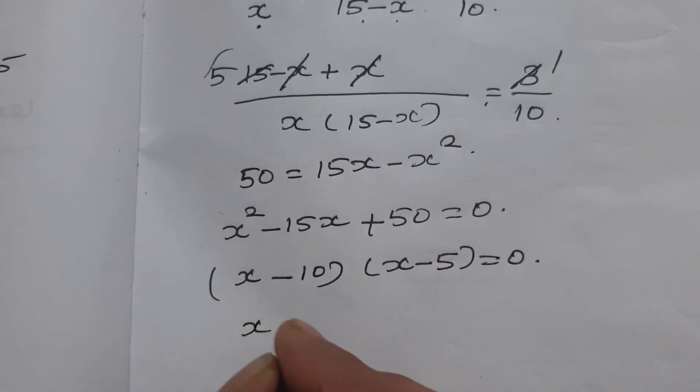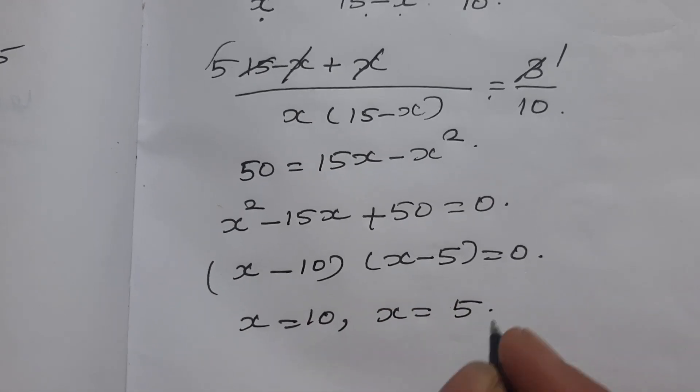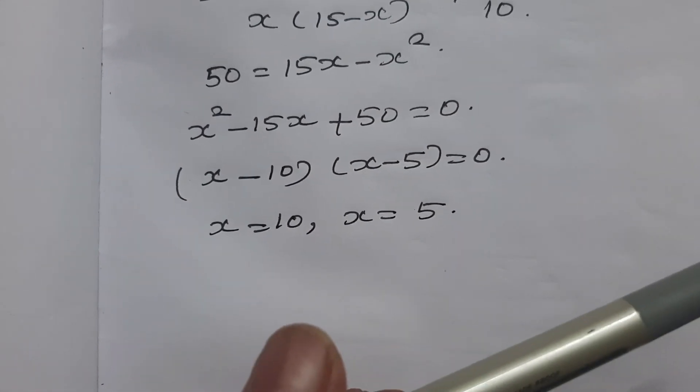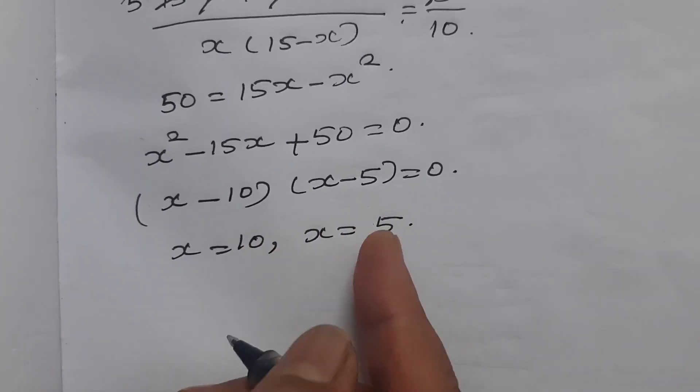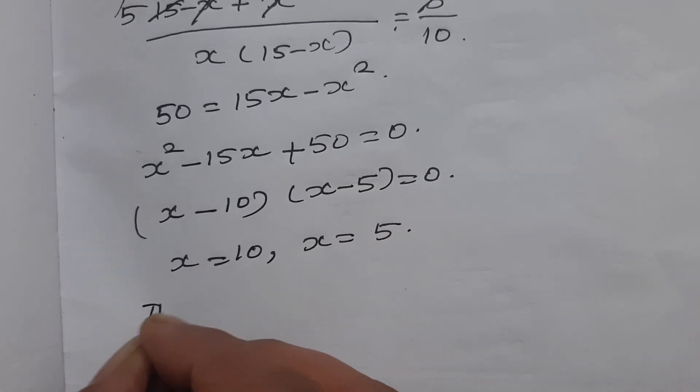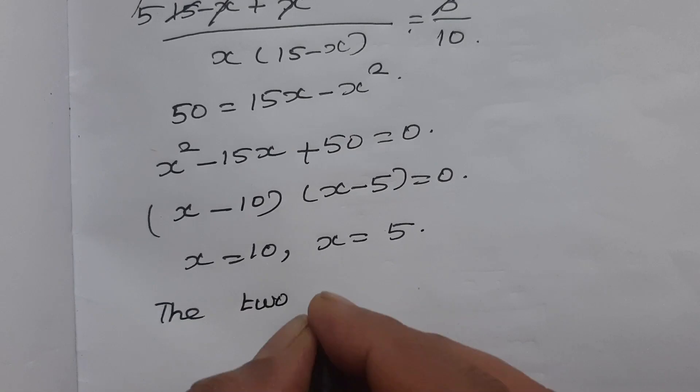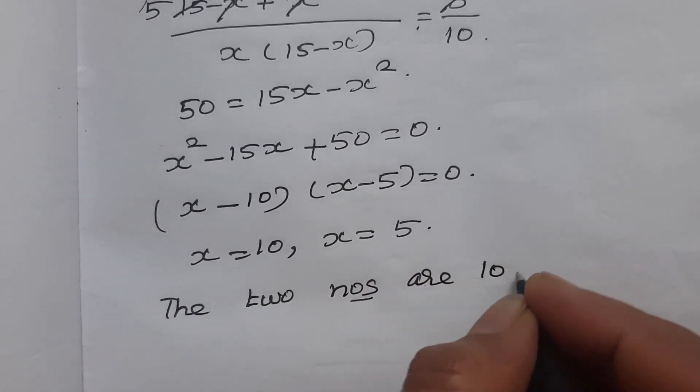So x equals 10 or x equals 5. The sum of two numbers is 15, and 10 plus 5 equals 15. Therefore, the two numbers are 10 and 5.